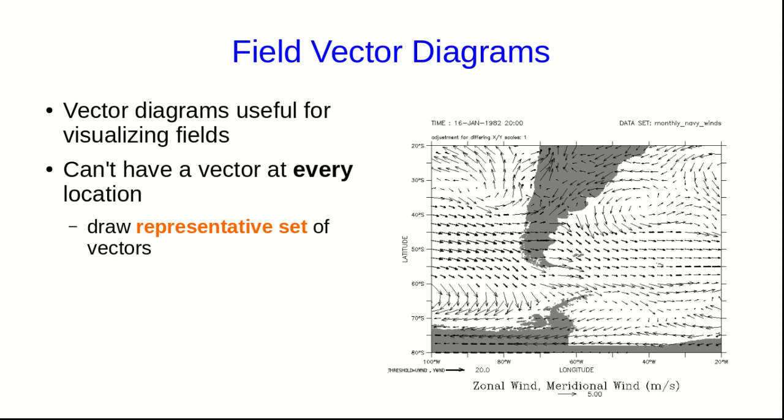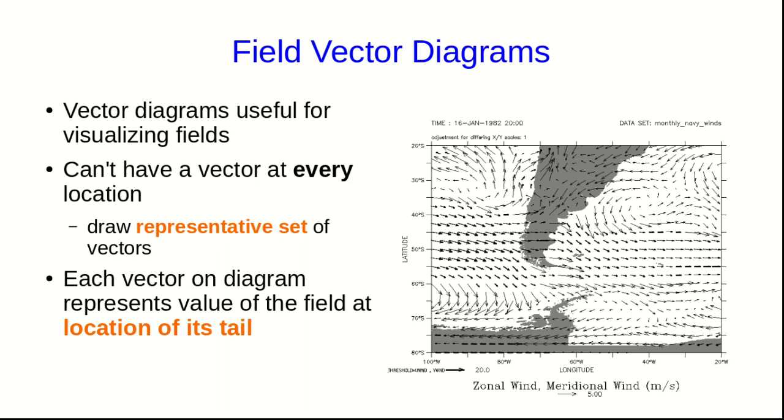But you can't have a vector at every location on the diagram. That would make, in the case of this map, the whole map black, which wouldn't be useful. So you have to draw a representative set of vectors. And for each vector you draw, it represents the value of the field at the location of the tail of the vector.